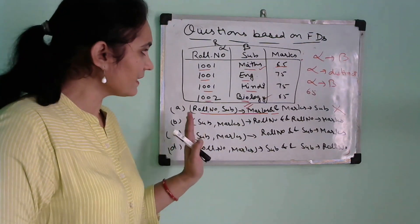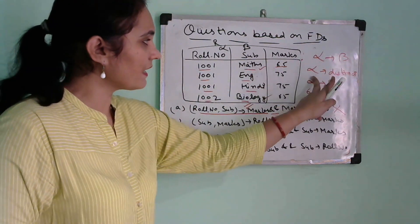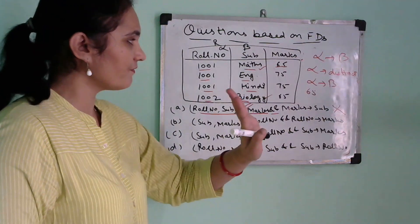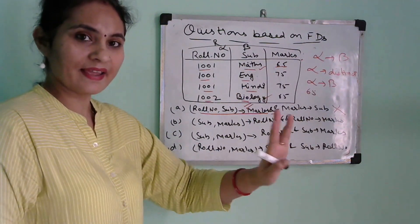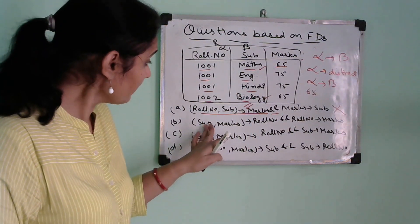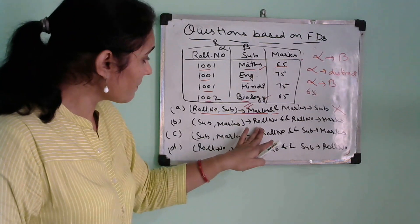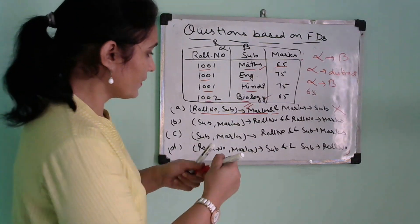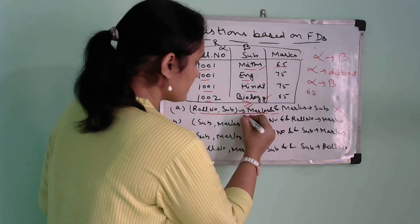Checking subject to roll number: all subject values are distinct (unique), so Trick 1 applies immediately. We don't need to check roll number at all. This functional dependency is valid.